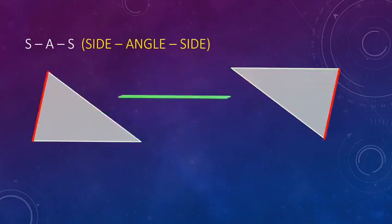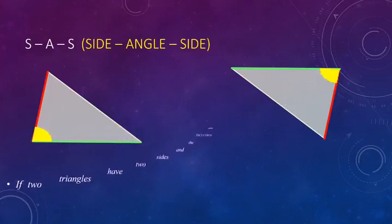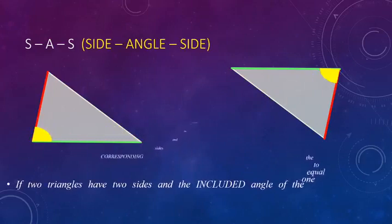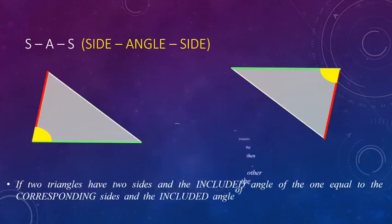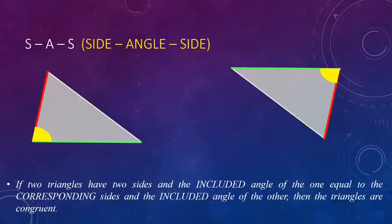If in two triangles one side is equal, another pair of sides is also equal in length, and the angle which lies between these two sides are also equal, then you can say that these two triangles are congruent by SAS criteria. Here the included angle is important.